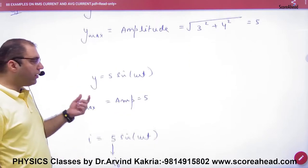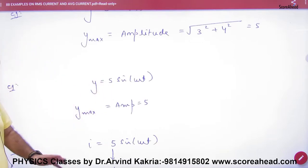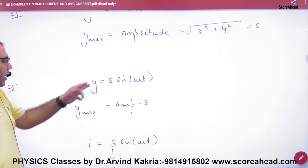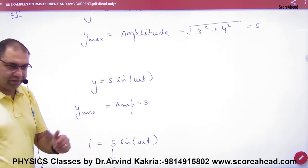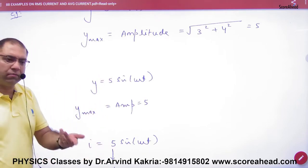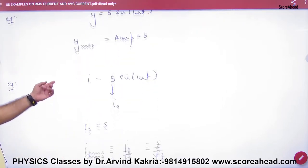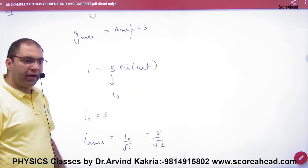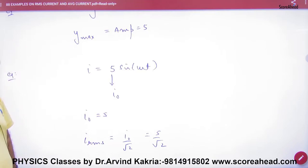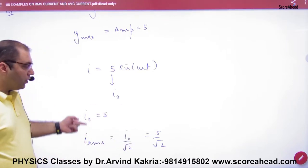In SHM, the equation was displacement = 5 sin(ωt). If I ask what is maximum displacement, you say 5. Amplitude is known as maximum displacement. So if the current is 5 sin(ωt), then maximum current is 5. Here RMS can be calculated in that way.